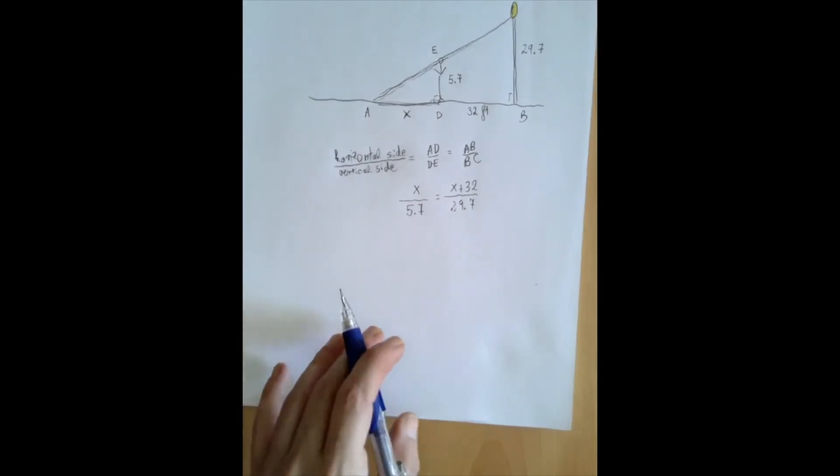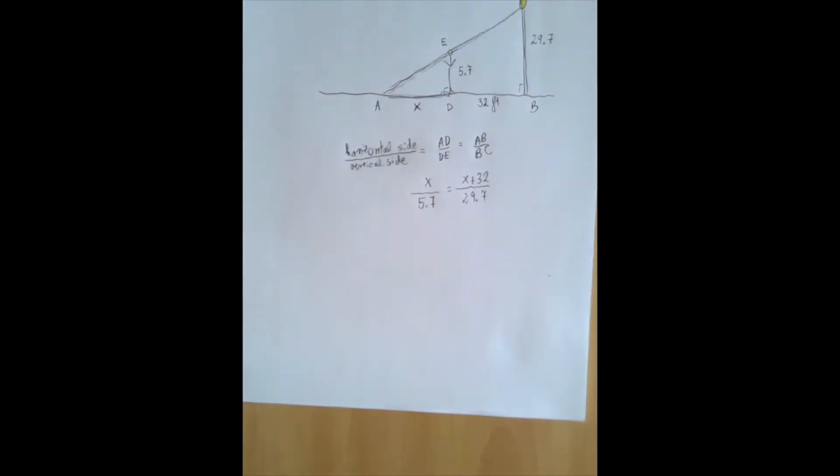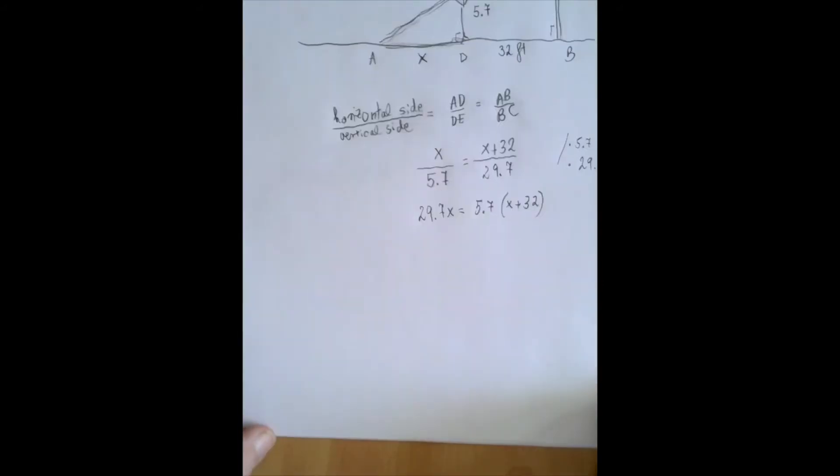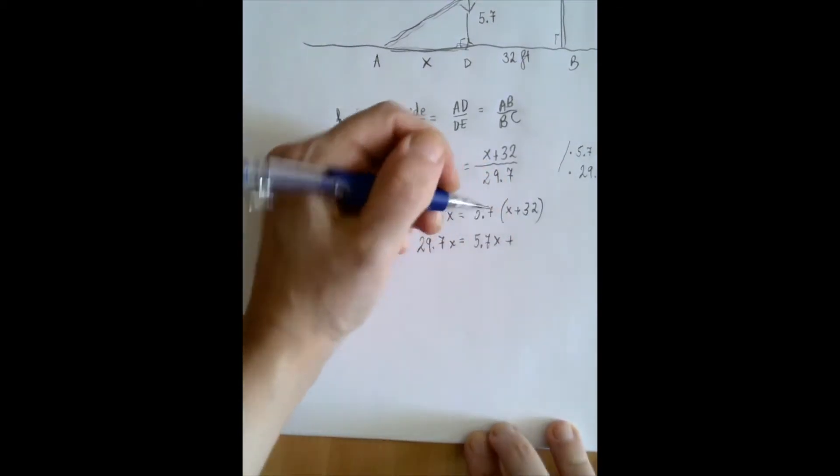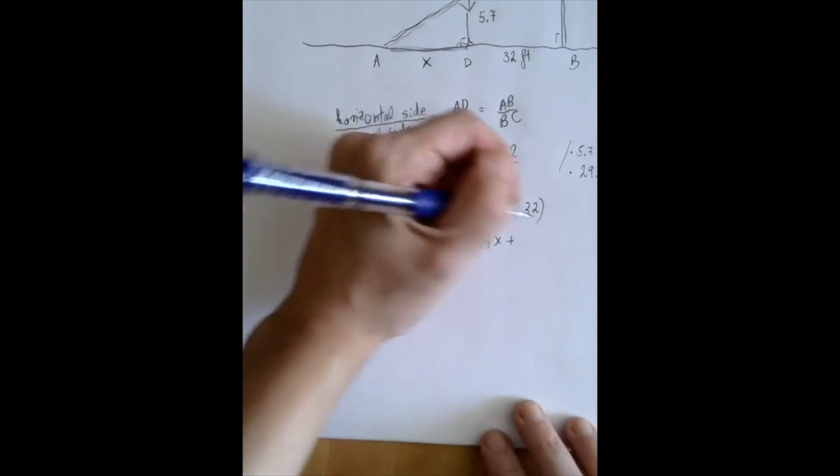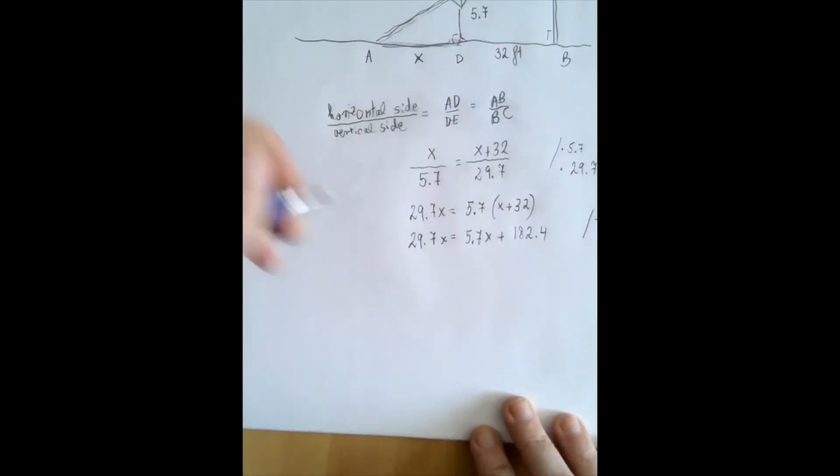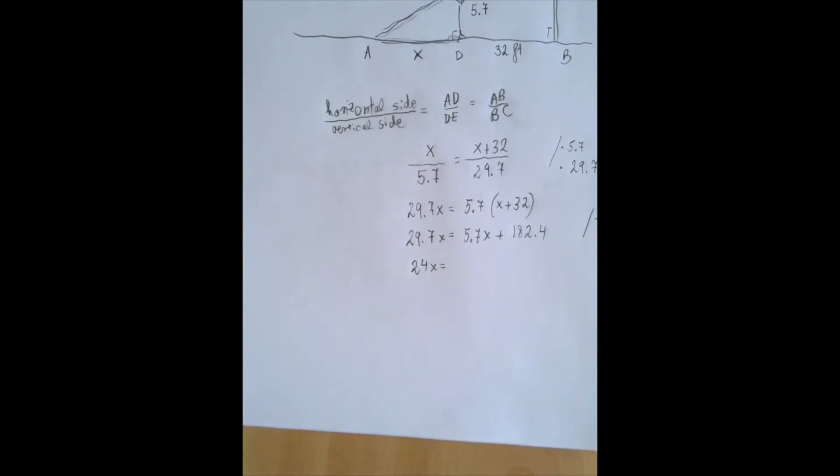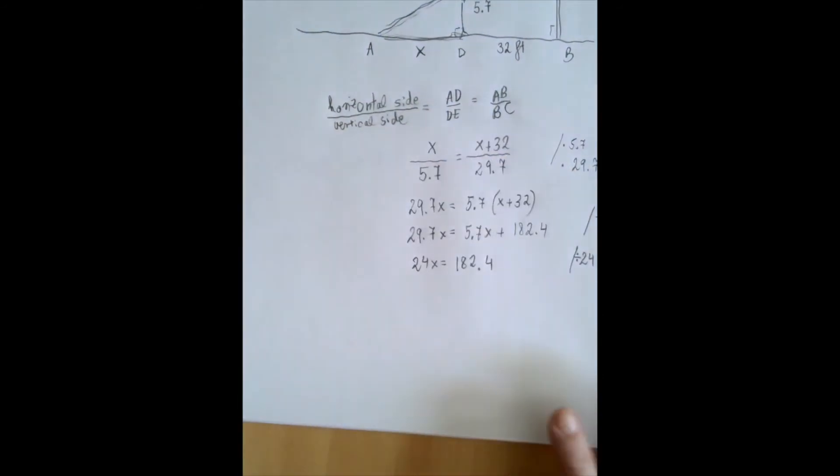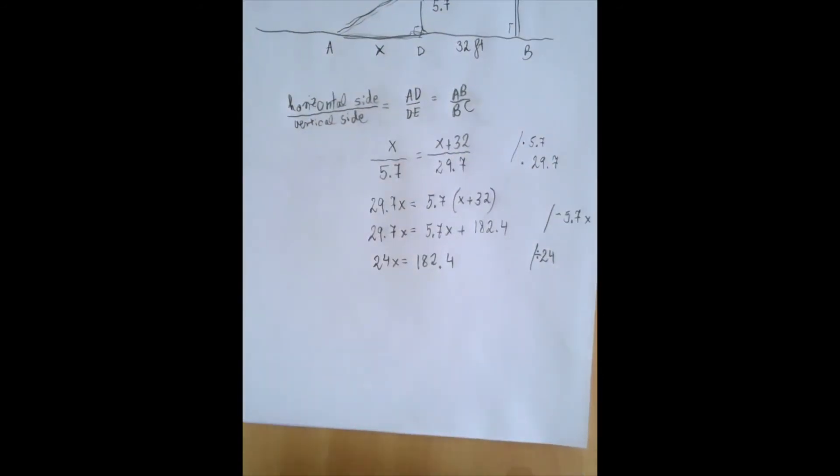Even though the coefficients aren't all that pleasant, we basically just have an equation that's linear in X. Let's multiply both sides by 5.7 and also by 29.7. We get 29.7X equals 5.7 times X plus 32. We distribute. 5.7 times 32 is 182.4. Let's subtract 5.7X. So we have now 24X equals 182.4. And now we divide both sides by 24 and get X is 7.6.